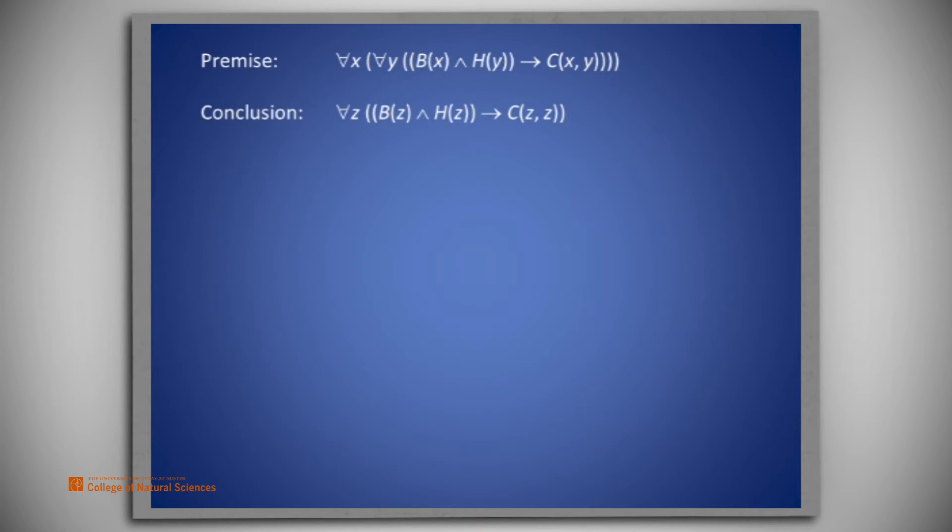Once again, symbolically, the premise is for all X, for all Y, if B of X and H of Y, then C of X and Y. The conclusion is for all Z, if B of Z and H of Z, then C of Z and Z.